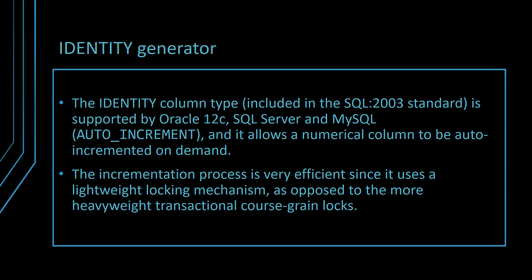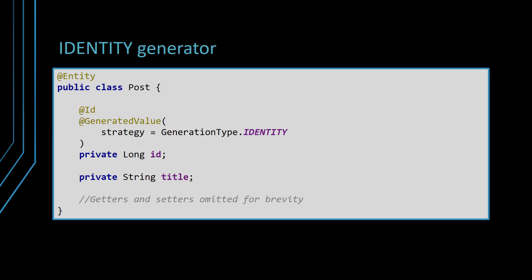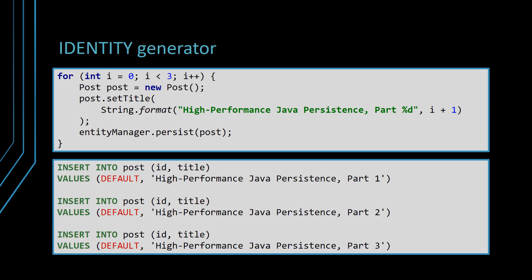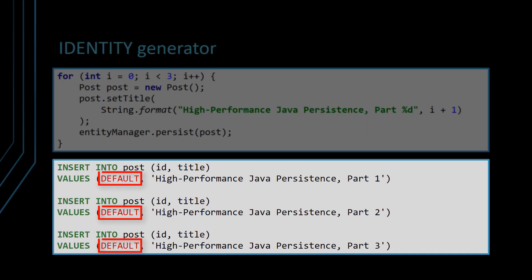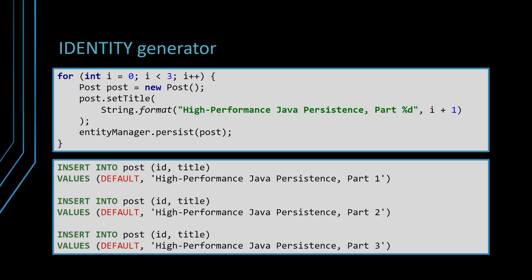However, this is not a bug — it's actually a feature. Because it's non-transactional, the counter can release locks right away after its internal value was incremented. The entity identifier mapping to an identity column is done via the identity strategy of the generated value annotation. When persisting one entity, Hibernate is going to use the default keyword for the primary key, and the database is going to allocate a new value after incrementing the identity column counter.